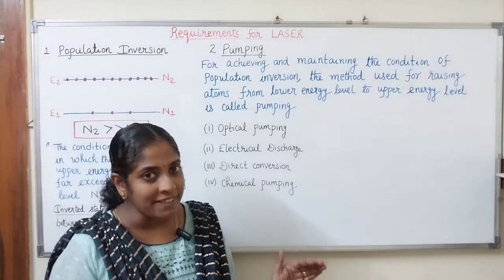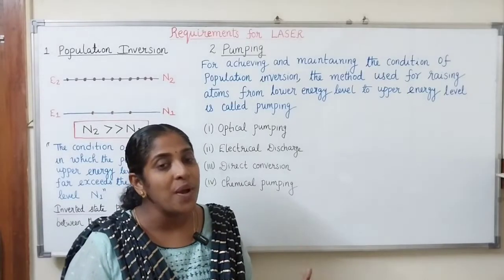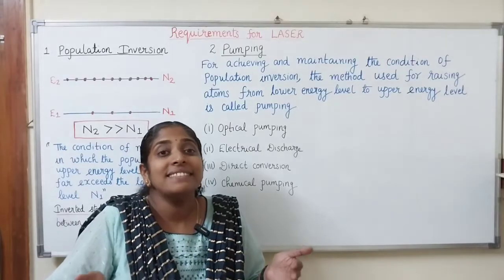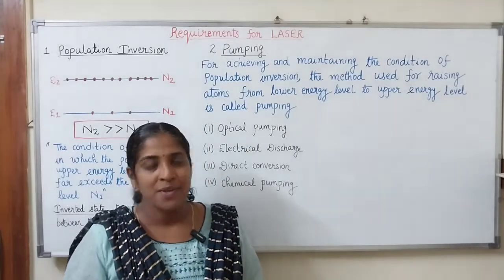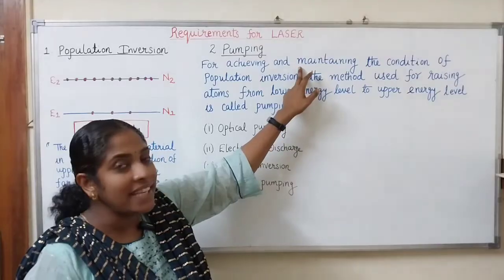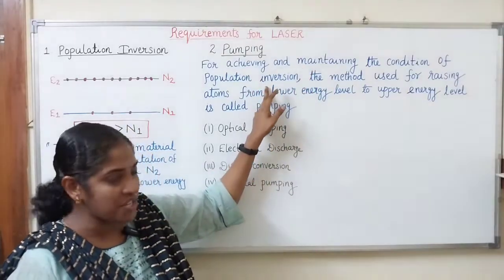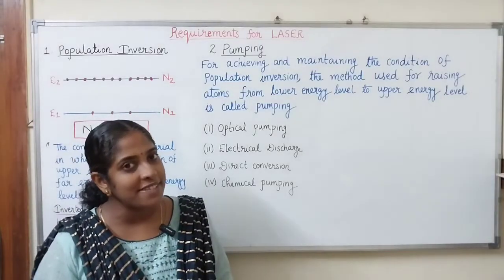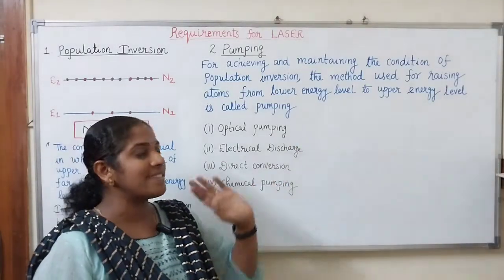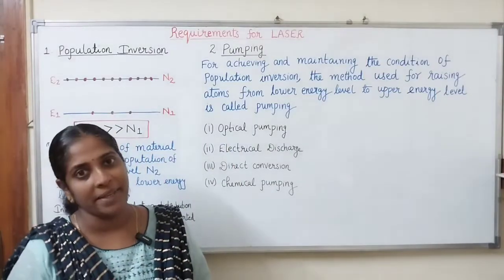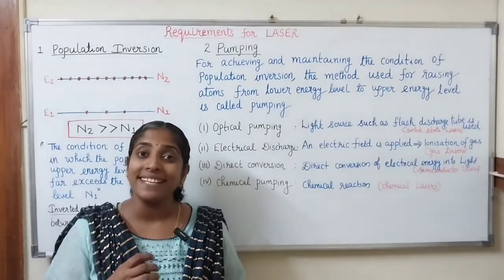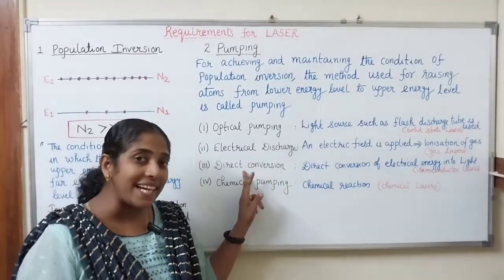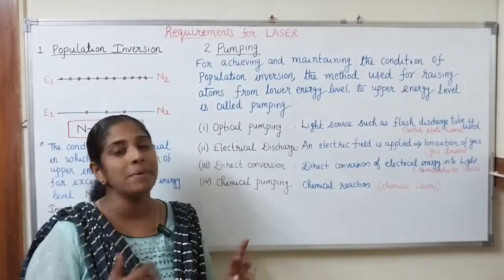By using some techniques, we raise the atoms from the lower energy level to the higher energy level, and that method is known as pumping. The method used for achieving and maintaining population inversion by raising atoms from the lower to the higher energy level is known as pumping. The various pumping techniques used are: optical pumping method, electrical discharge method, direct conversion method, chemical pumping method, etc.